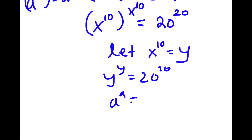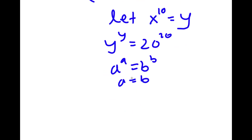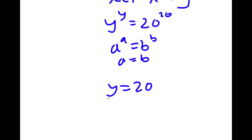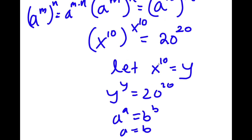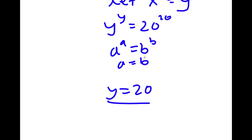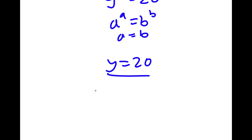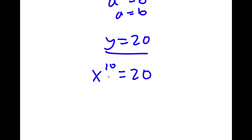Since a to the power of a equals b to the power of b means a equals b, we get y equals 20. Since we let x to the power of 10 equal y, that means x to the power of 10 is equal to 20, and x is equal to the tenth root of 20.